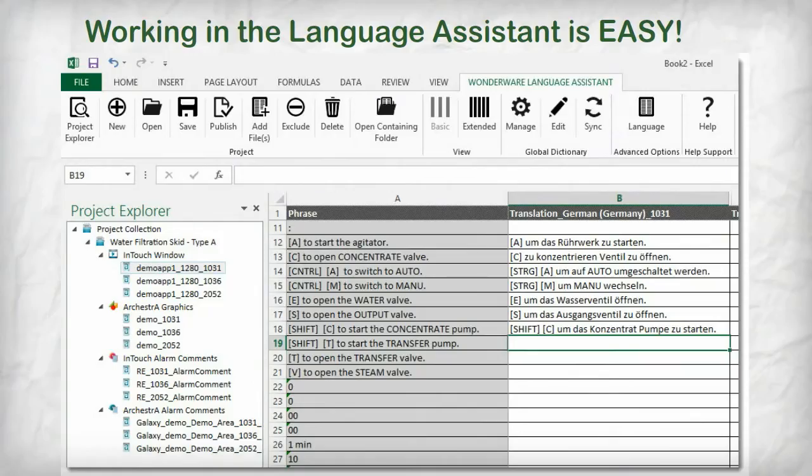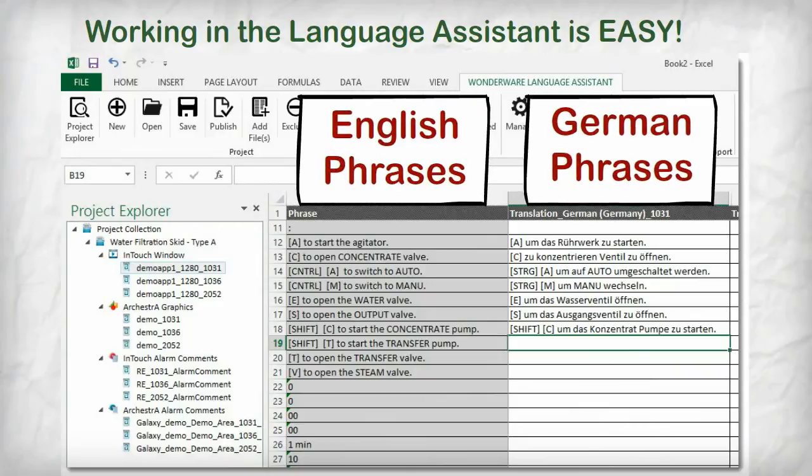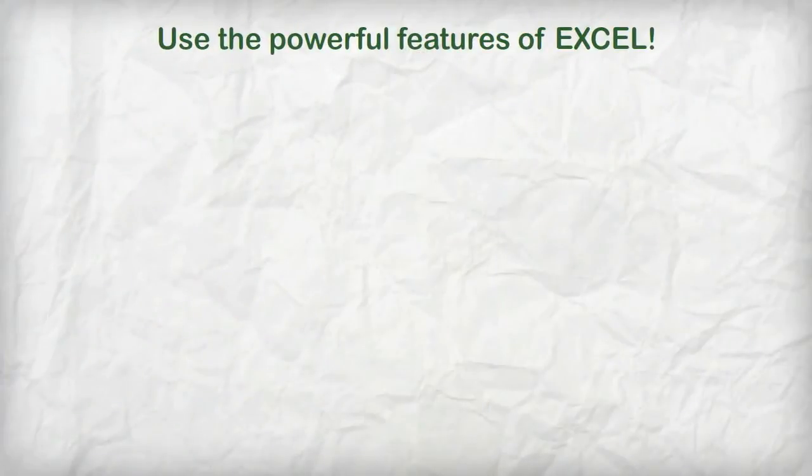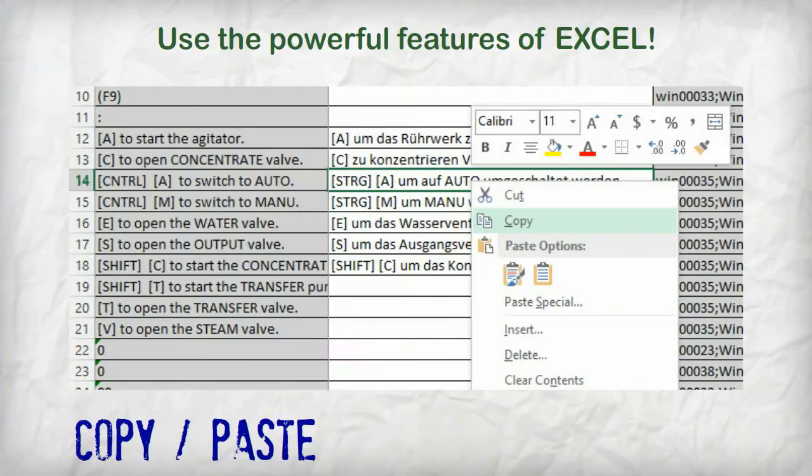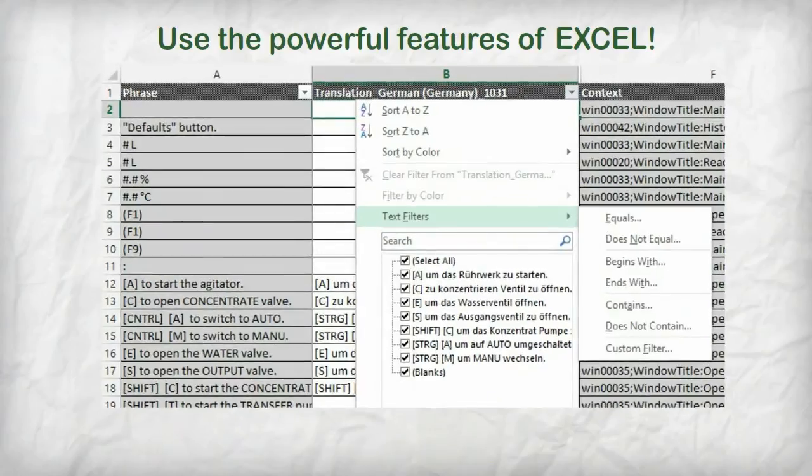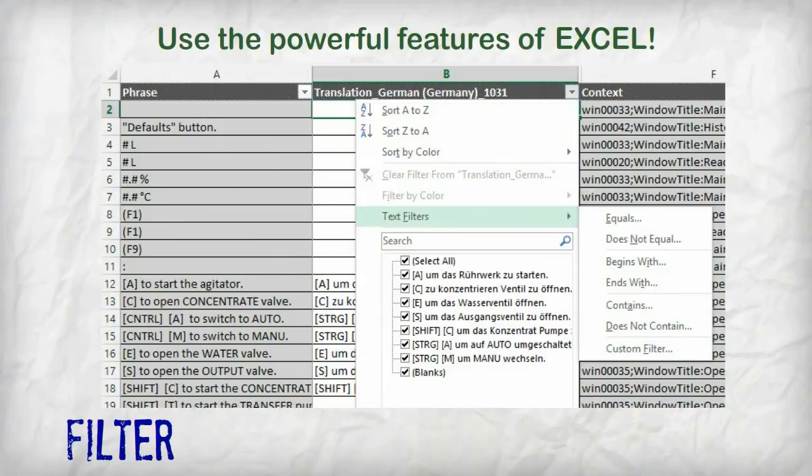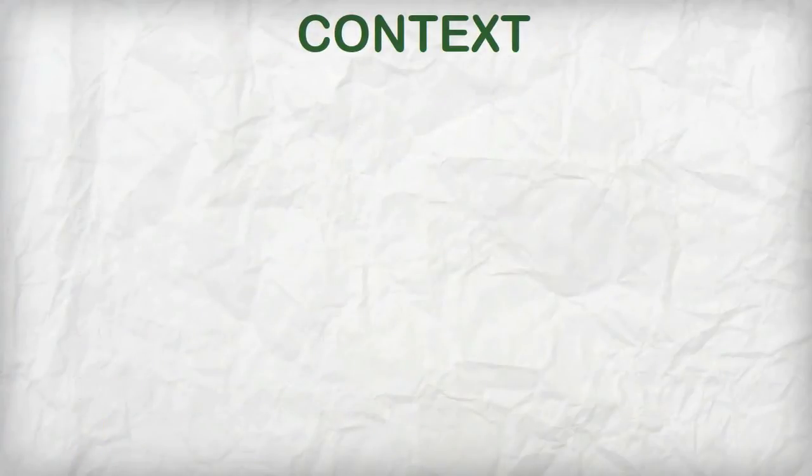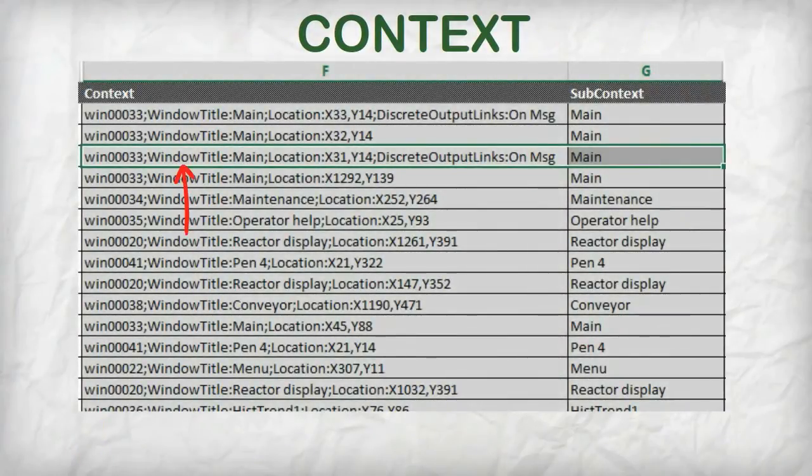The Language Assistant makes it easy. You simply enter the translation right next to the original phrase. And, because it's an Excel Add-in, you can take advantage of the rich feature set in Excel, like powerful search and filter tools to help you find the phrases that you want to translate. Use the context columns to help understand the context that the phrase is being used in.